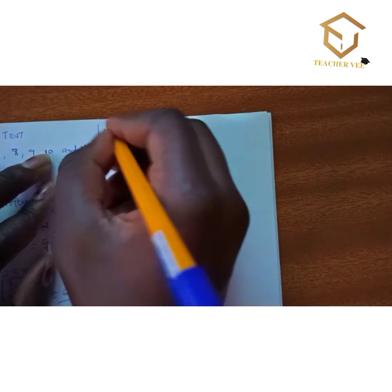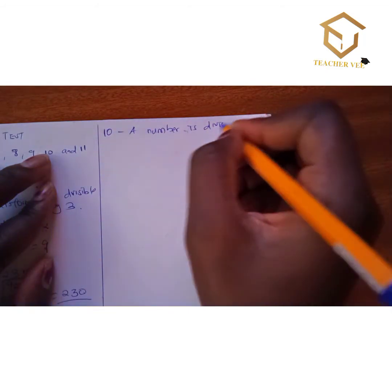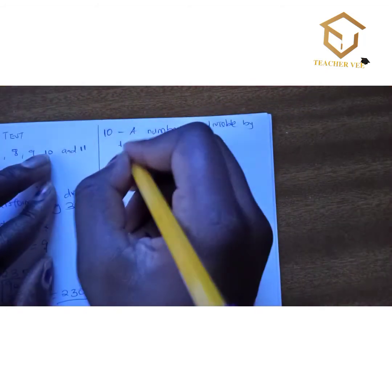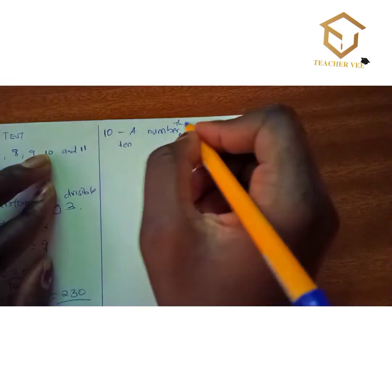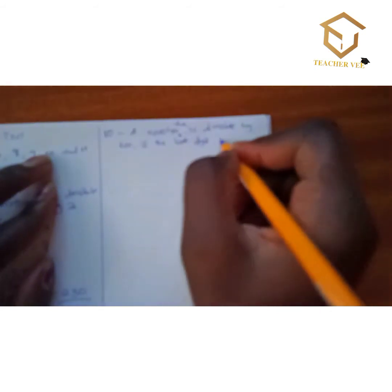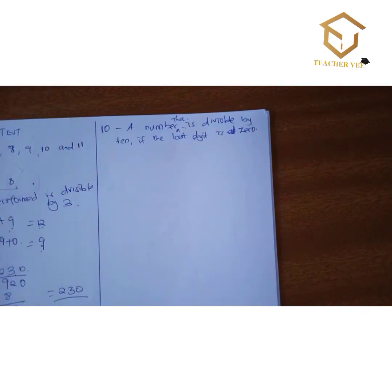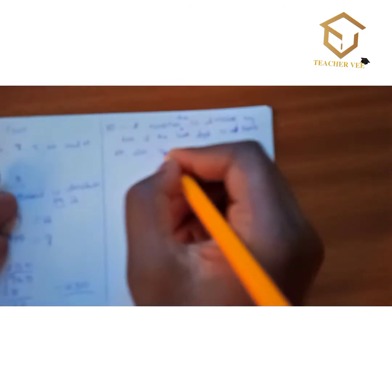Divisibility test of 10: this is very simple. A number is divisible by 10 if its last digit is 0. For example, 10, 20, 30, 40, and so on.